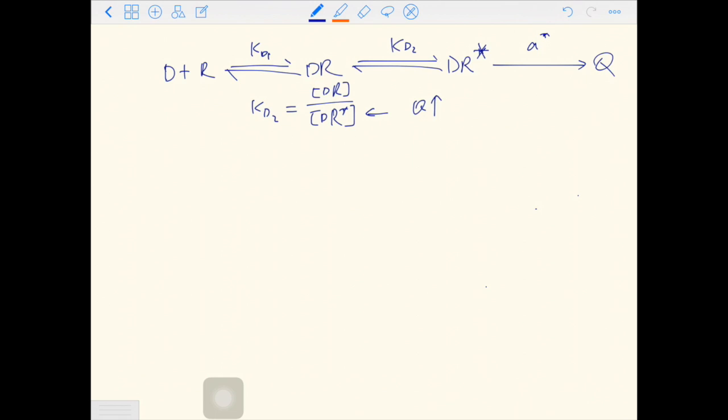By now, you should be able to derive the form of Q by yourself. Using the equations of state and the definitions of Kd1 and Kd2, the final form of the equation is alpha star times Rt over Kd2 plus 1. So this part is the maximum response you can get.